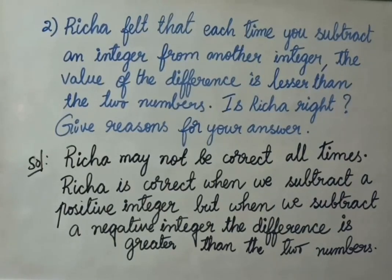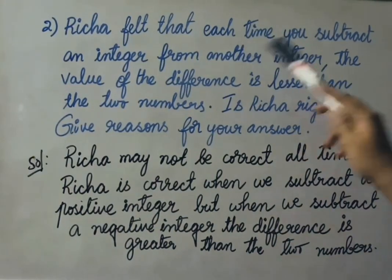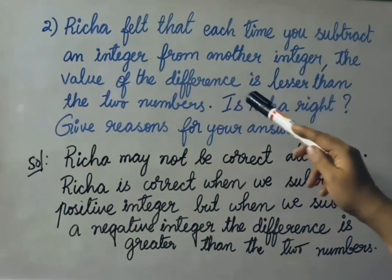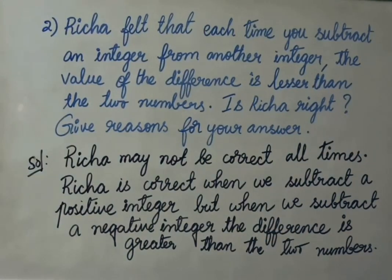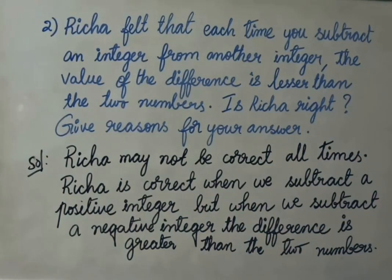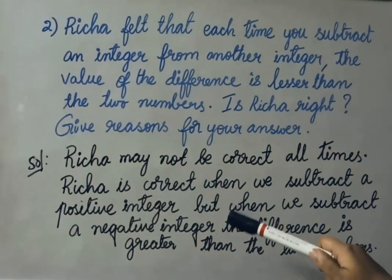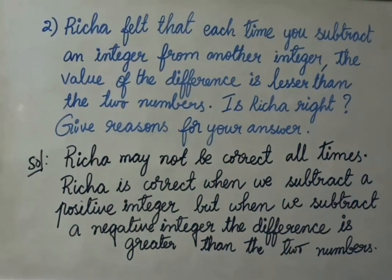See now the second question. Reacher felt that each time you subtract an integer from another integer, the value of the difference is lesser than the two numbers. Is Reacher right? Give reasons for your answer. Solution: Reacher may not be correct all times, because Reacher is correct only when we subtract a positive integer. But when we subtract a negative integer, the difference is greater than the two numbers.